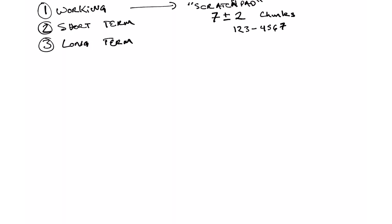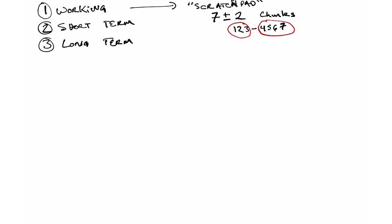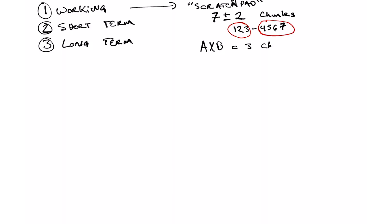However, there is a way to improve your working memory. This is a process called chunking. The key insight here is that those 7 bits of information can actually be larger or smaller. For example, if I say A, X, B, those are 3 random letters, and you need to remember them as 3 distinct random letters.